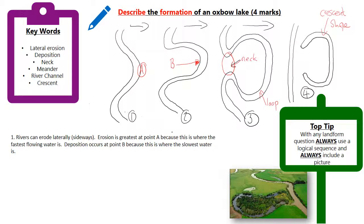It's much easier to describe if you've actually labeled it with a letter or a number. So erosion is greatest at point A because this is where the fastest flowing water is. Deposition occurs at point B because this is where the slowest water is. So I've described pictures one and two in one go here.